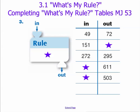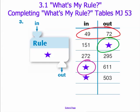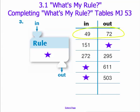In this next type of function machine, we look at a machine where both inputs and outputs are given. In some situations the output is unknown, and in others our input is unknown. To solve these problems, let's take a close look at the places where both inputs and outputs are given. Our first instance: 49 is our input and 72 is our output. What change has gone on between 49 and 72? How do we get from 49 to 72?